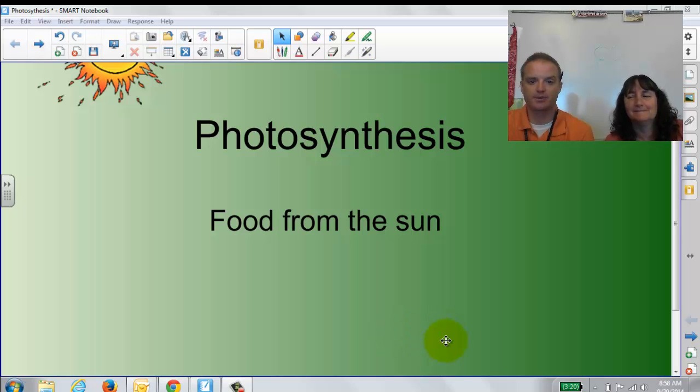So in this chapter, guys, we were talking about, now, still with cells, but now more, some of these big jobs that cells do. And this first job that some cells do is photosynthesis. So this is food from the sun.